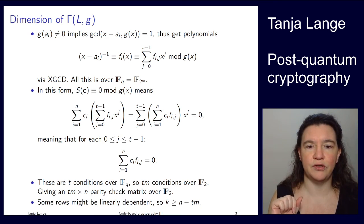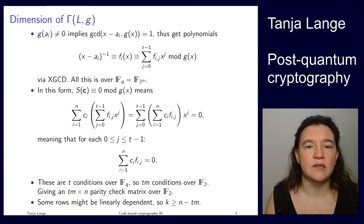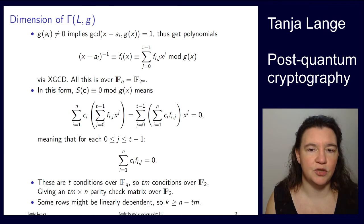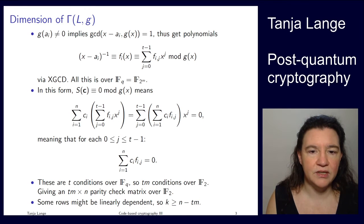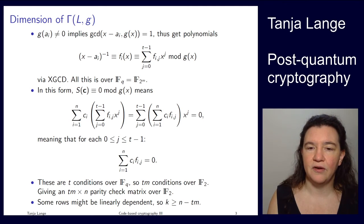The ci's live over F2, but the definition, the ai's live over F2 to the m, and so accordingly also the fi are field elements from the larger field. So we're having these t equations there. So we have t different powers of x, each of which has to be zero individually. So the sum from 1 to n of the ci, fi has to be zero. So that's just sorting by the powers of x to the j.